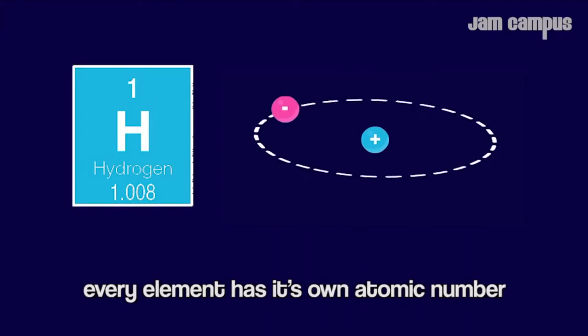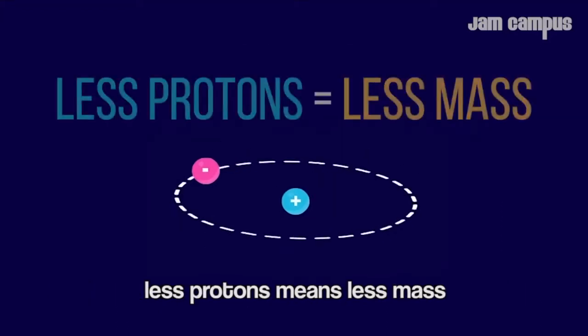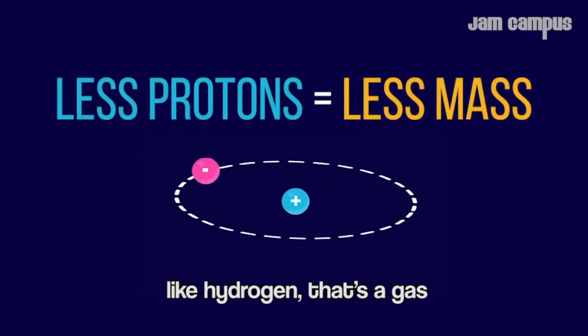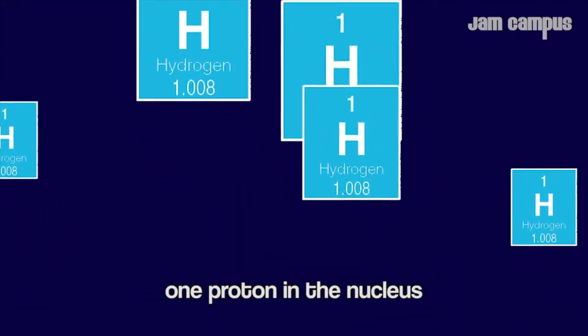Every element has its own atomic number, which tells us how many protons are located in its center. Less protons means less mass. Like hydrogen, that's a gas. It's less dense than the air, with one proton in the nucleus.